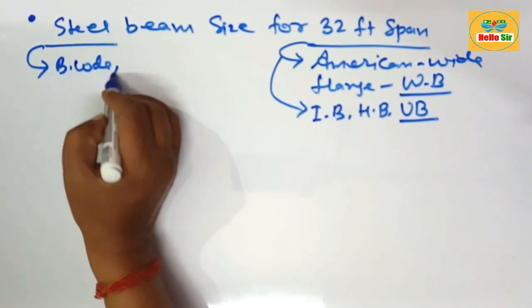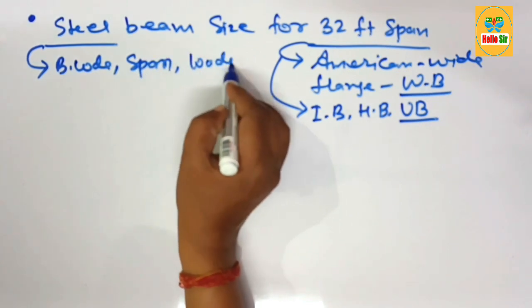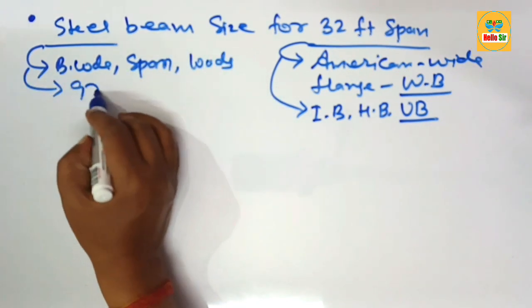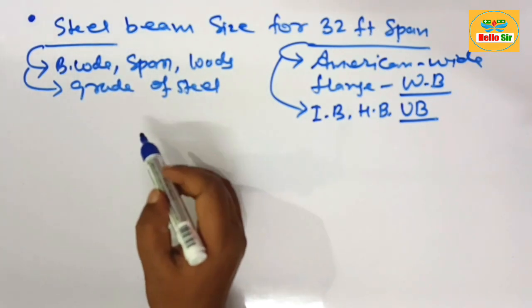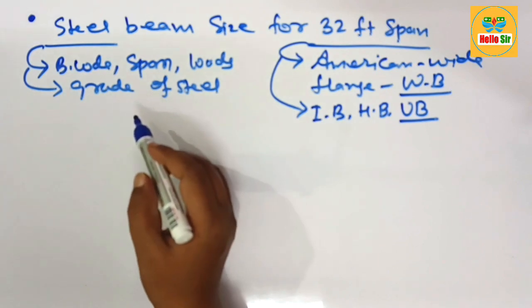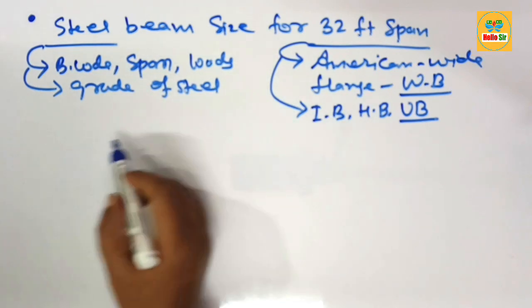These are the major factors which decide accurate size of steel beam required for a specific span. First we understand about American wide flange W beam.